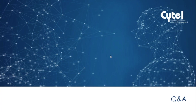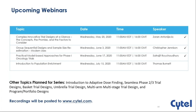Second question: has Pfizer used the model-based approach as a default method in phase one dose escalation studies? Speaking for Pfizer, model-based approaches are mostly used. Methods like 3+3 are not used in Pfizer at all. Here is the schedule of upcoming webinars — recordings of the first three are available on our webpage sitel.com. Our next webinar is July 15th, where Thomas Burnett will speak about population enrichment. We hope to see you all there.